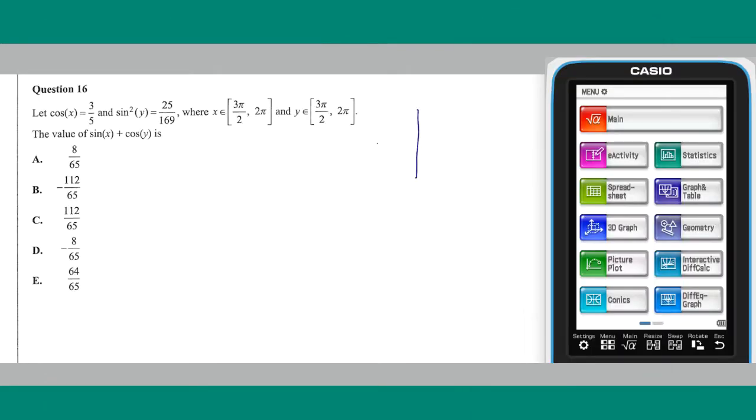Based on the location of the angles x and y on the unit circle and the information given, we can deduce a value for sine x and cosine y.